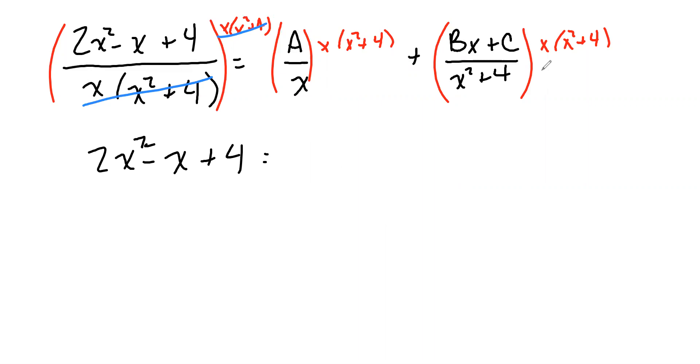2x² - x + 4. On the first fraction, the x is canceled.